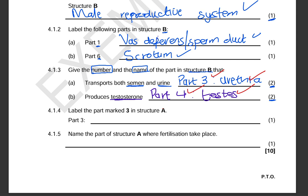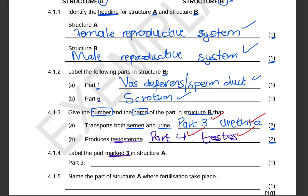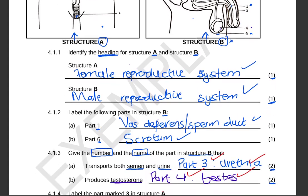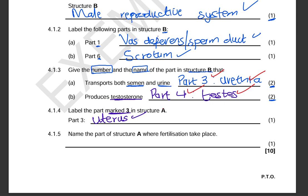Question 4.1.4 asks us to label the part marked three in structure A, which is the female reproductive system. Scrolling up to find part three in structure A — that is the uterus. They are not asking for a function, just the name of the structure, so the answer is simply: uterus.